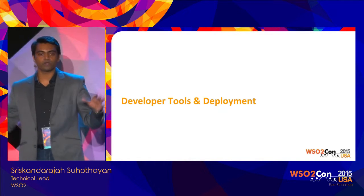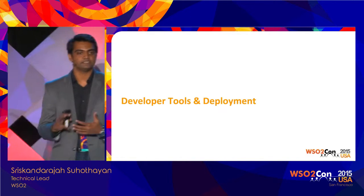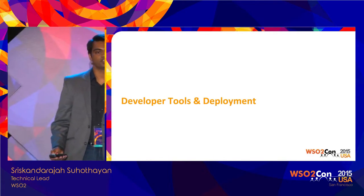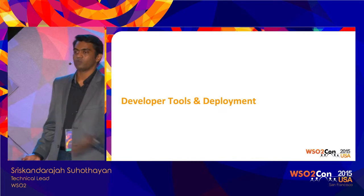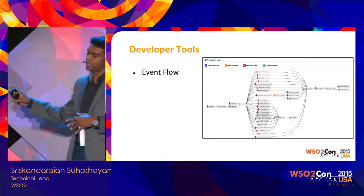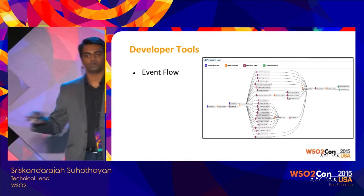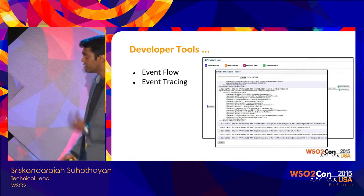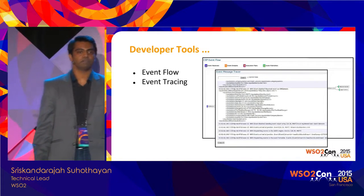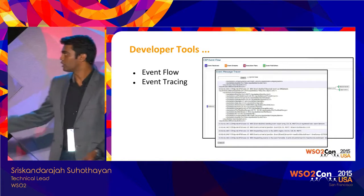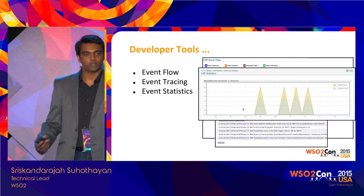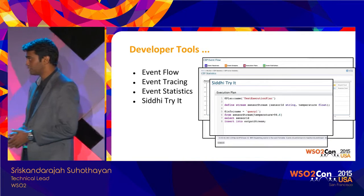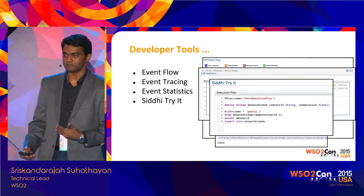Now let's look at the developer experience — how they build a solution and deploy it. We have an event flow diagram showing how events flow to different systems so you can understand what's happening at each level. We have event tracing capabilities showing how events are converted and transformed for debugging, and component-level statistics showing how many events are generated at each level. We also have a 'try it' feature for Siddhi so you can write a real-time query and try it out immediately.